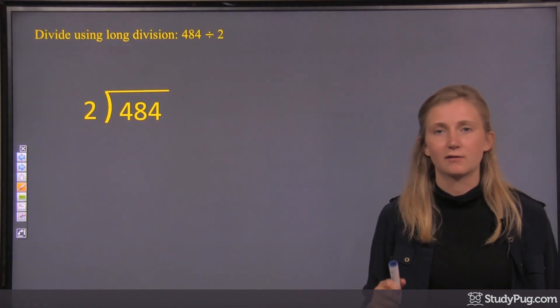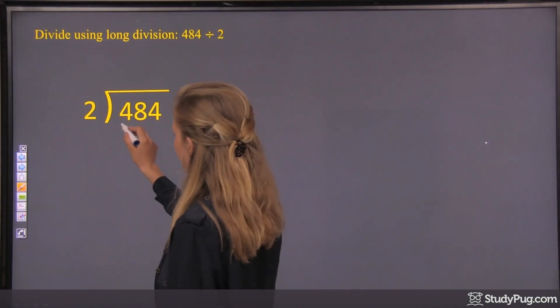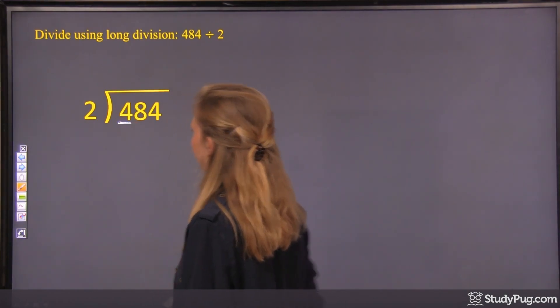So where do we start our division? What's our first step? We look to our biggest place value. So in 484, our biggest place value is the 4 here.